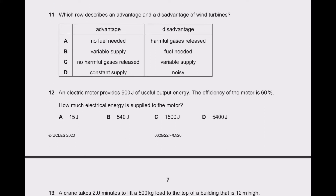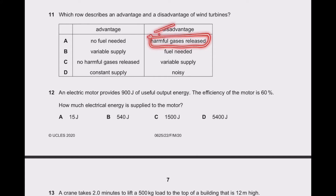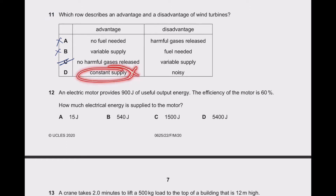Question 11: advantages and disadvantages of wind turbines. Looking at the options: no fuel needed is an advantage — yes; harmful gas released is a disadvantage — no, this is wrong; variable supply is a disadvantage — yes. So answer C is correct. Constant supply — no, it does not give constant supply; it depends upon the wind.